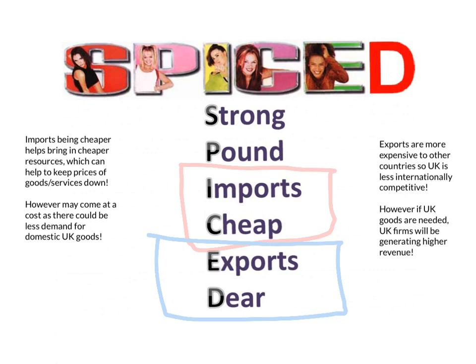If the pound weakens, as it has done in the last year, we simply reverse this. Instead of strong, we say weak pound. Instead of imports being cheaper, imports become dearer. And instead of exports becoming dear, exports become cheaper. I call it WHIPPY DECK — weak pound, imports dearer, exports cheaper — we just reverse it.